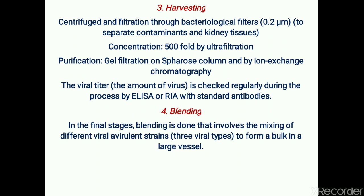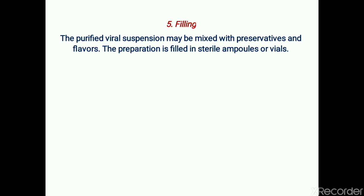The fourth step is blending. In the final stages, blending involves the mixing of three viral serotypes to form a bulk in a large vessel. The fifth step is filling — the purified viral suspension may be mixed with preservatives and flavors, and the preparation is filled in sterile ampoules or vials.